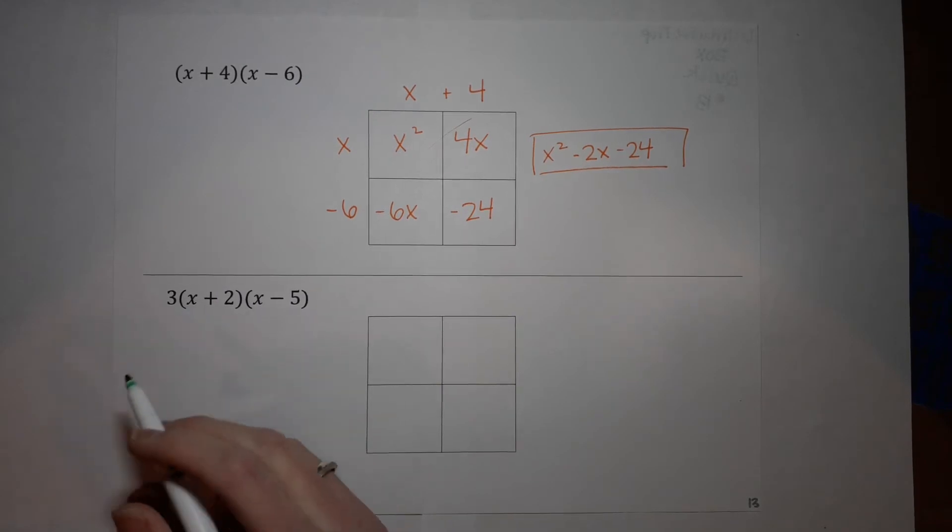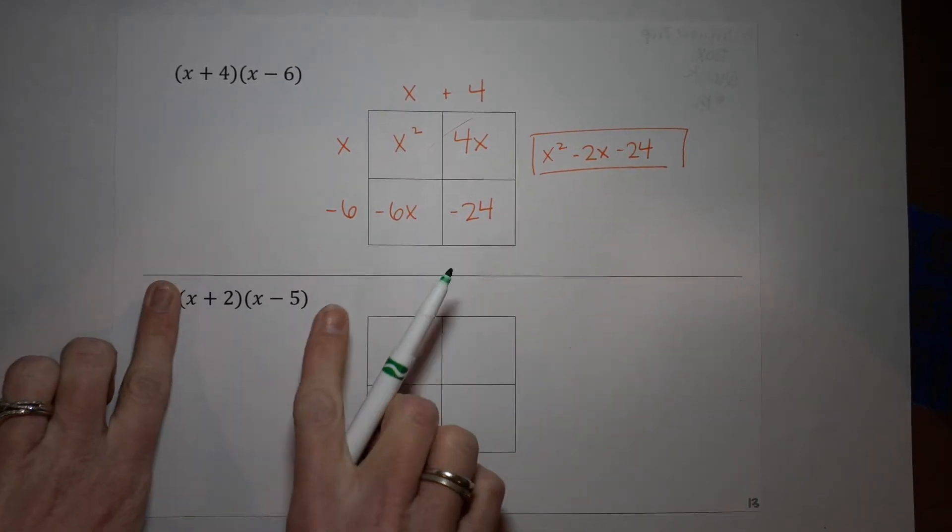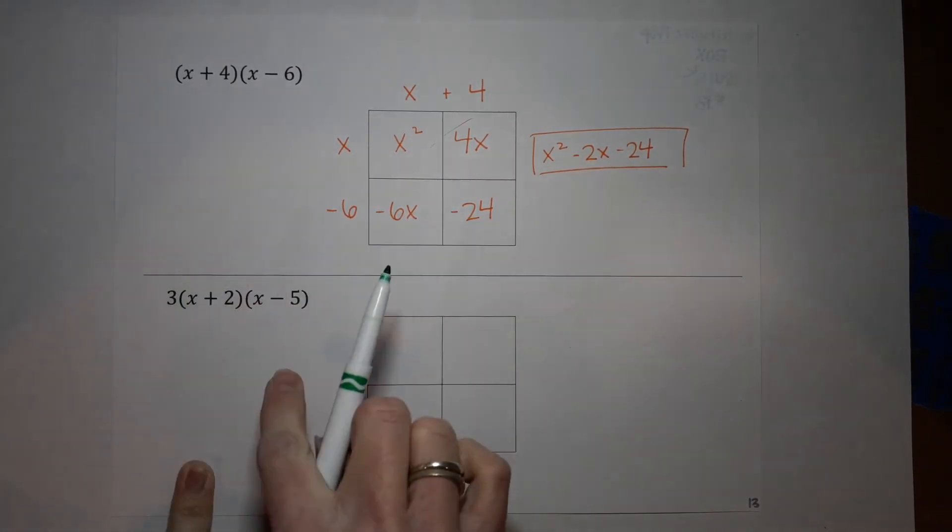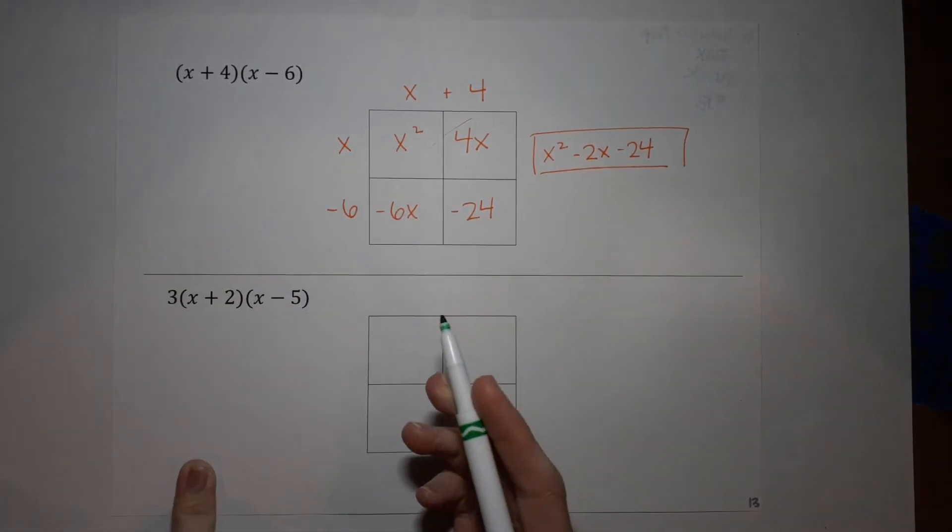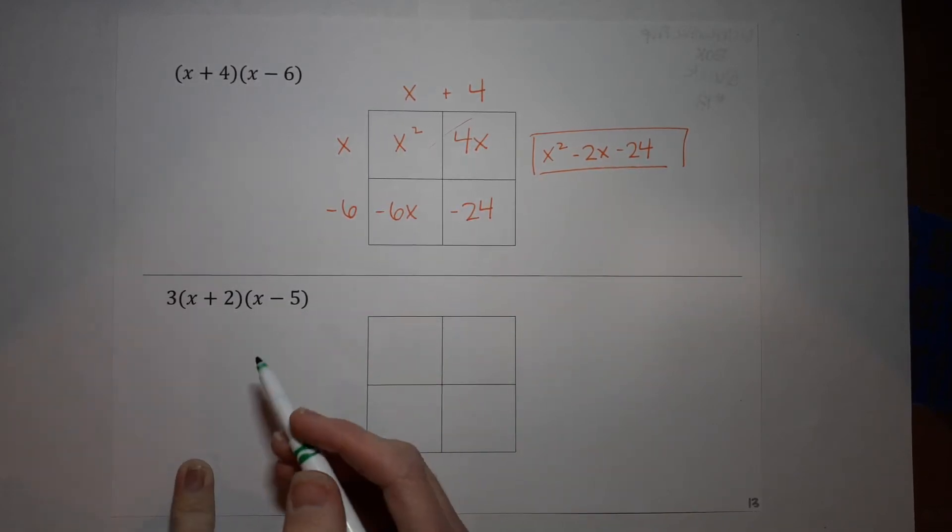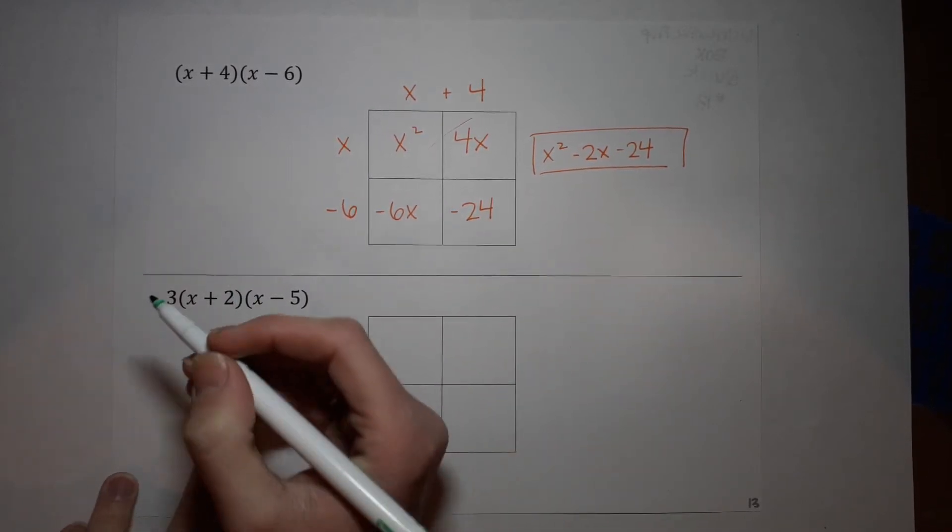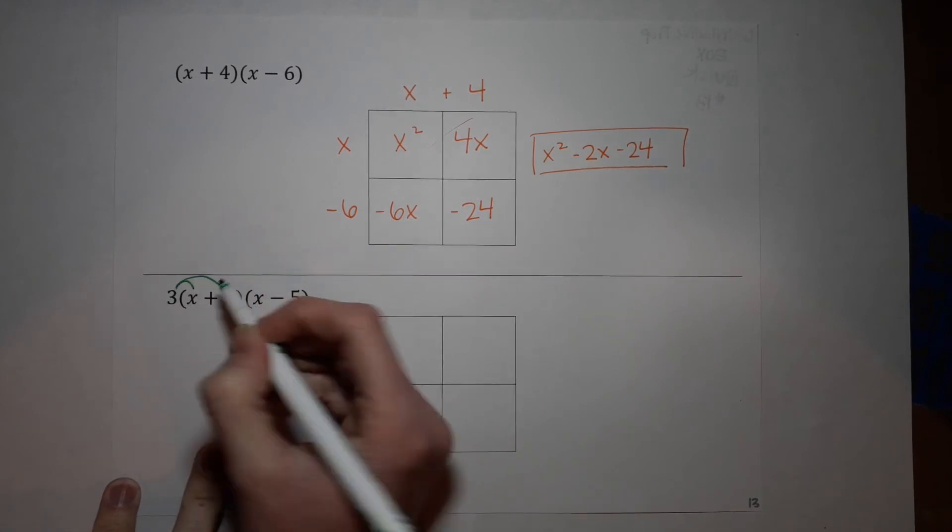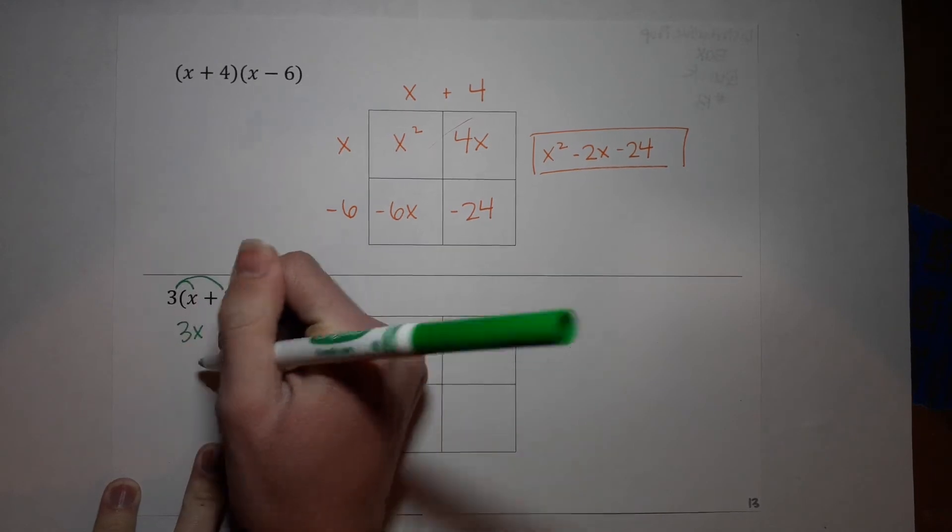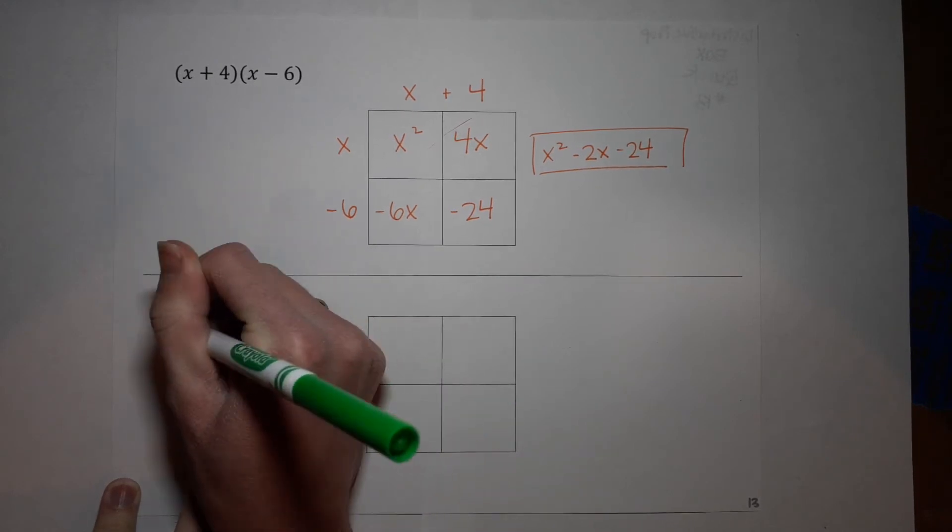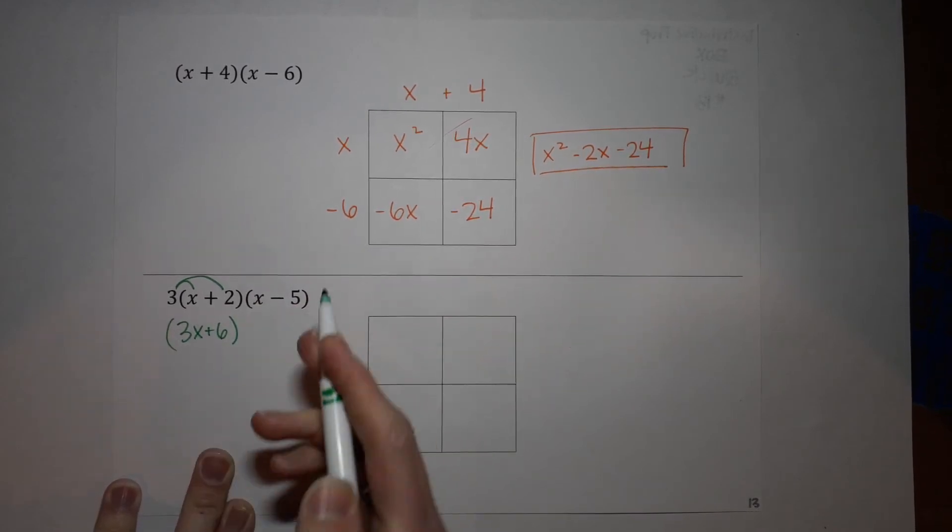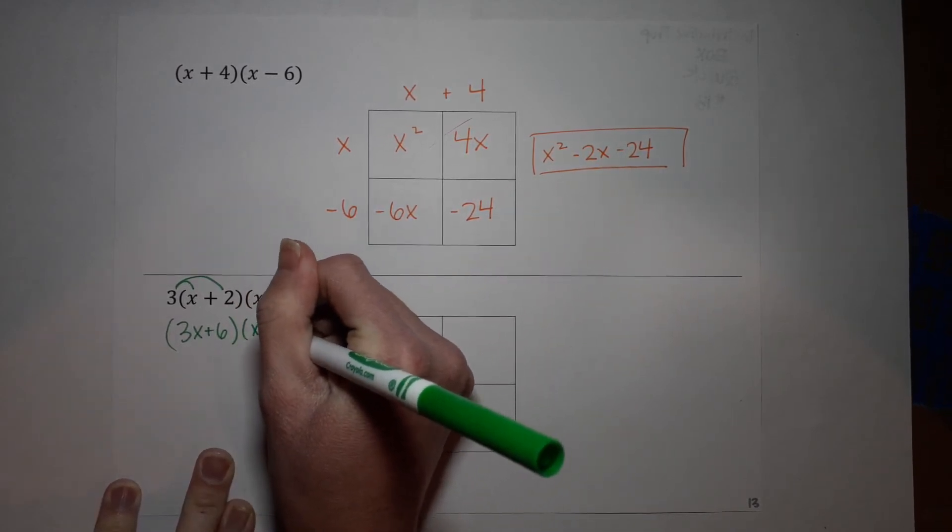All right, now this one just a little bit different. I've got a three out front. There's two ways you can do it. You can either multiply these two like we did up here and then multiply the three in, or you can multiply the three in to one of them first and then multiply those two. You can do it either way, you'll get the same answer. I'm going to go ahead and multiply the three in first. So three times x gives me three x, three times two gives me six.